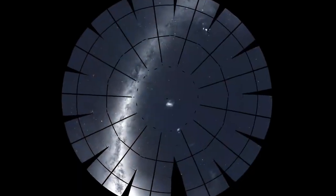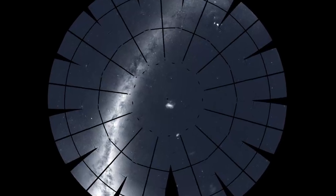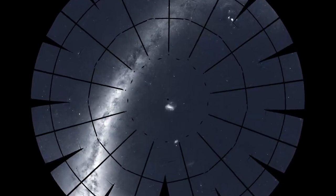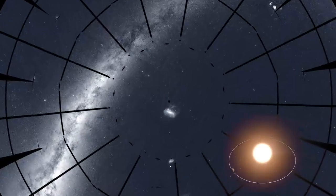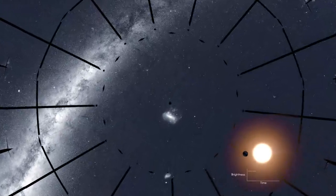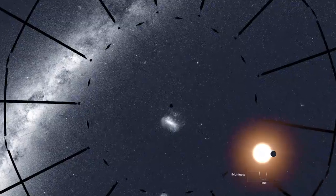TESS stares at patches of sky for long stretches, recording light from thousands of stars. Some of these stars have planets that cross or transit in front of them. TESS sees these events as tiny, regular dimmings of the host stars.